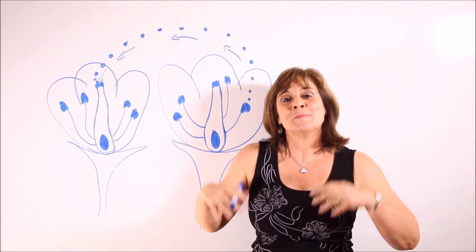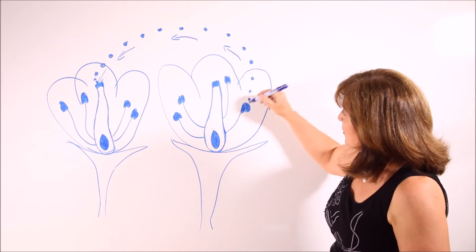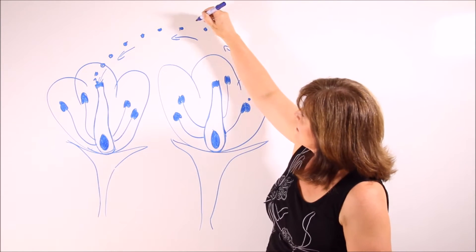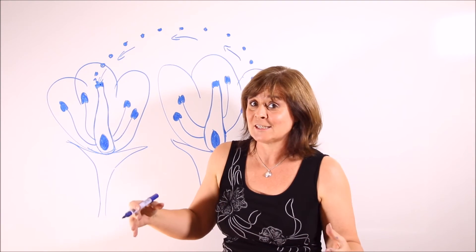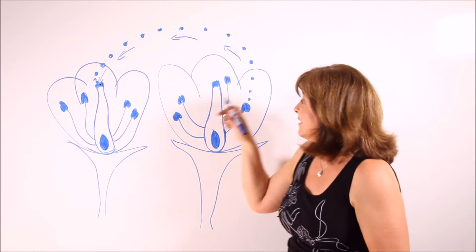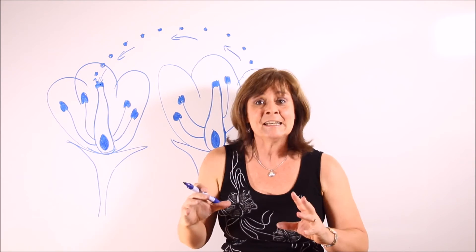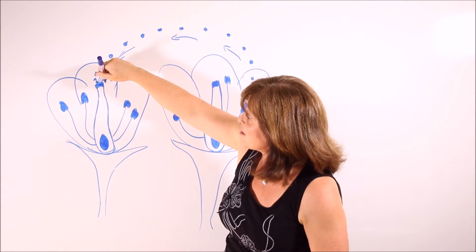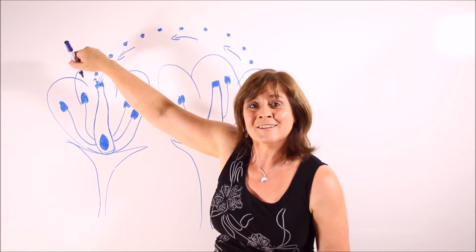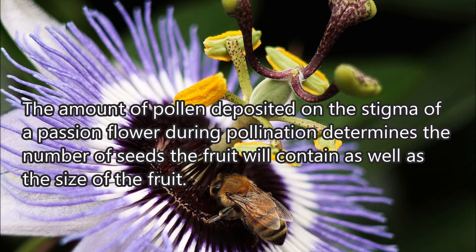I've drawn a picture of two flowers to make the explanation of pollination simpler to understand. The anther produces pollen, which is then transferred to the stigma of another flower in the case of cross-pollination, or the same flower in the case of self-pollination. Basically, the anther produces pollen which is transferred to the stigma — the top of the structure called the pistil — and that is the first step in plant reproduction.